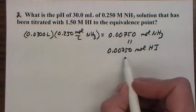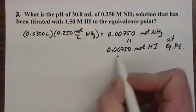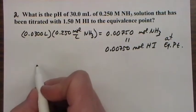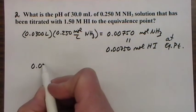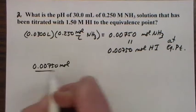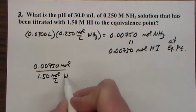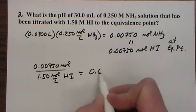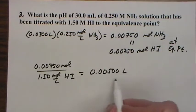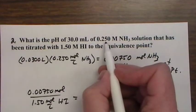Okay, so at equivalence, so this is at the equivalence point, the moles have to be the same, so they cancel out. We have to figure out how much acid we added, so we take that number of moles and we divide by the concentration. It's moles per liter of HI, so that gives us 0.00500 liters. This is a very small volume because the concentration is so much larger than this one.